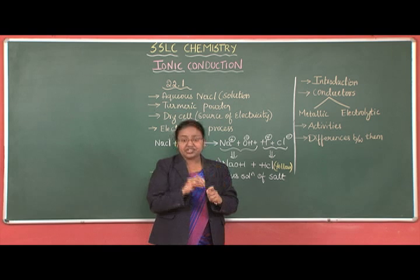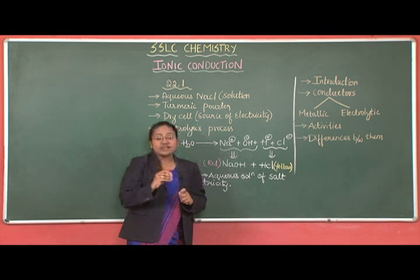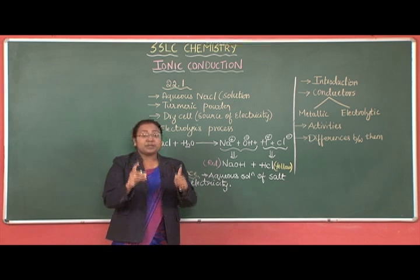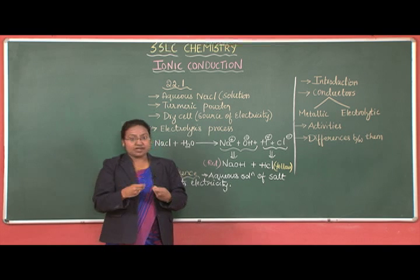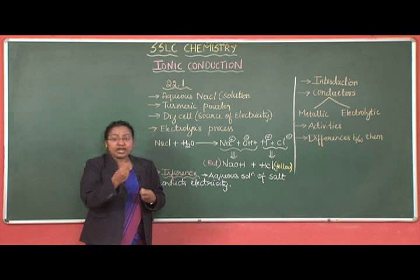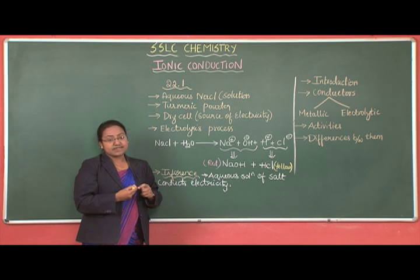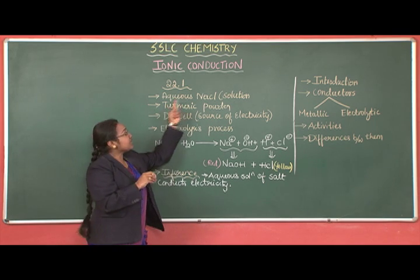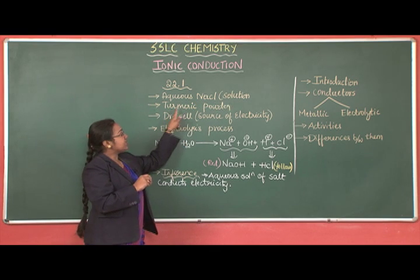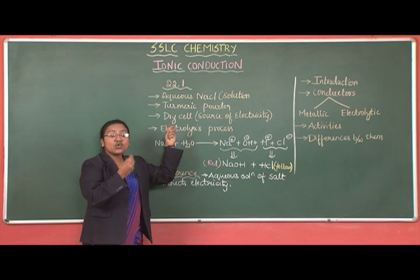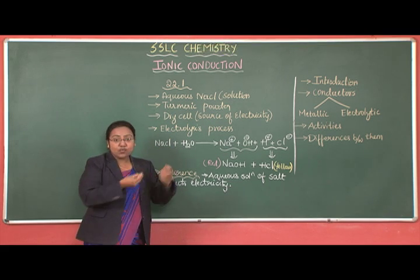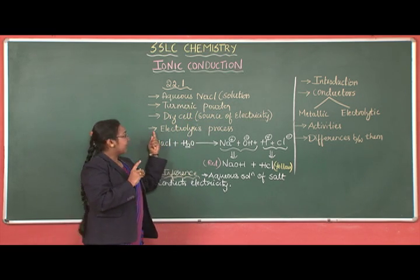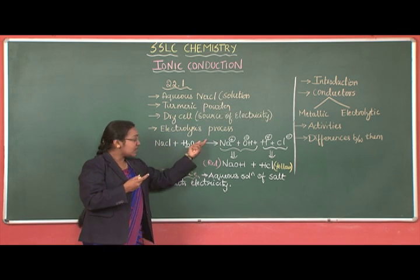Now let us concentrate on Activity 22.1 as mentioned in your textbook. Observe the picture in the textbook and follow my explanation. What do we require to perform that experiment? Number 1: aqueous NaCl solution — NaCl salt dissolved in water. Number 2: turmeric powder. Number 3: a source of electricity — a dry cell with a voltage of 1.5 volts. Finally, we will observe the electrolysis process and its phenomena.